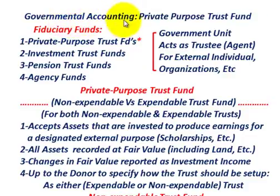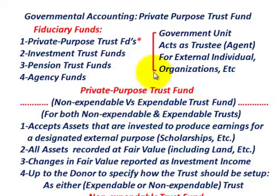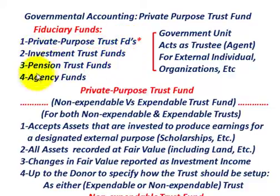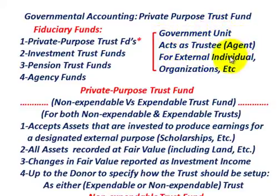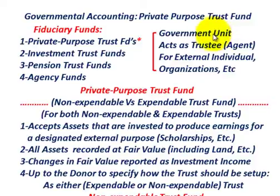We're going to be going over governmental accounting for a private purpose trust, looking at whether it's set up as a non-expendable trust versus an expendable trust fund. These trust funds are part of the fiduciary funds under governmental accounting, which include the private purpose trust fund, investment trust fund, pension trust funds, and agency funds. In a private purpose trust fund, the government unit acts as a trustee or agent for some external individual or organization, which makes a contribution that goes into a trust fund managed by the governmental unit.